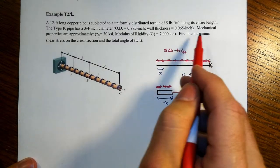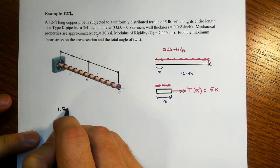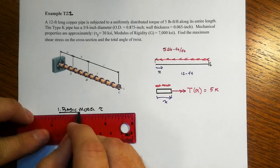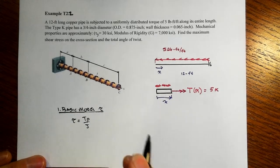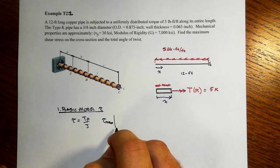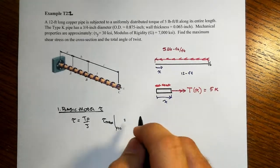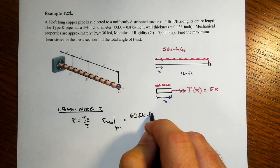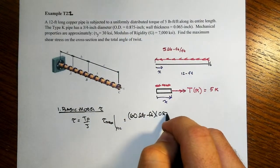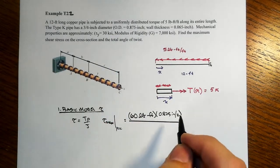Note what we're asked for: find the maximum shear stress in the cross-section and the total angle of twist. Our basic model for shear stress, in the elastic range, is τ = Tρ/J. So τ_max is evaluated at ρ equal to c, that outer fiber. That maximum occurs at the far right, so that would be 60 pound-feet of torque times the outer radius, which is 0.875 inches divided by 2 — because that's the diameter — divided by J.